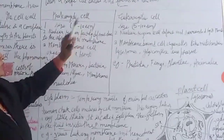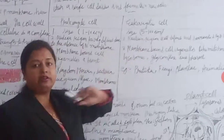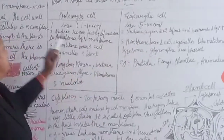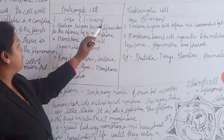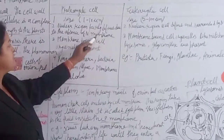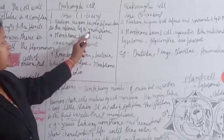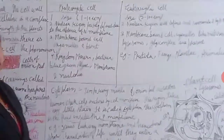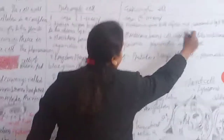In prokaryotic cells, the size is 1–10 micrometers, and in eukaryotic cells the size is 5–100 micrometers. The nucleoid region is merely defined due to the absence of a nuclear membrane. In eukaryotic cells, the nucleus is well defined and surrounded by a nuclear membrane.